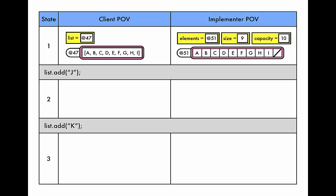But to the implementer it's so much more. The implementer can see into that list object and see the three fields that are being used to implement it. Elements, the partially filled array and indeed it is partially filled now as you see.